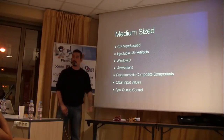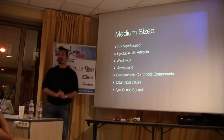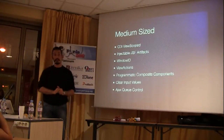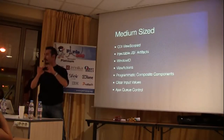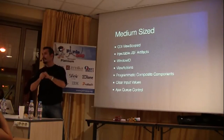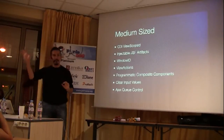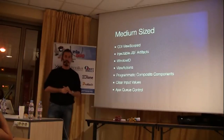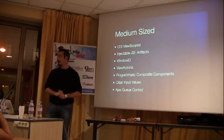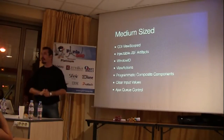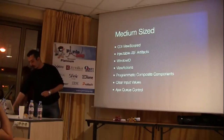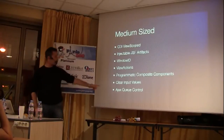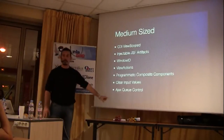AJAX queue control — f:ajax will get a delay attribute so that, for example, if you have f:ajax on a keyup event and you type quite fast, you'll end up with 10 requests. Now with the delay attribute, only the last one will be executed. And also you will have more control on the queue.